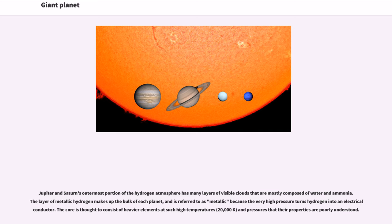Jupiter and Saturn's outermost portion of the hydrogen atmosphere has many layers of visible clouds that are mostly composed of water and ammonia. The layer of metallic hydrogen makes up the bulk of each planet, and is referred to as metallic because the very high pressure turns hydrogen into an electrical conductor. The core is thought to consist of heavier elements at such high temperatures, 20,000 K, and pressures that their properties are poorly understood.